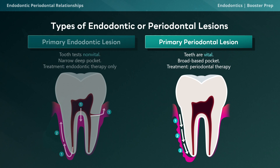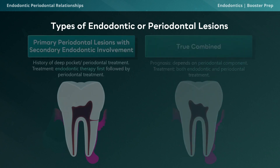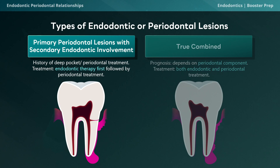If the periodontal lesion makes its way all the way to the apex and affects the pulp, the pulp can become necrotic. When that happens, we say we are dealing with a primary periodontal lesion with secondary endodontic involvement — meaning the periodontal disease progressed until pulpal involvement occurred, leading to a necrotic pulp. For treatment, we must address the endodontic problem first, followed by periodontal therapy.